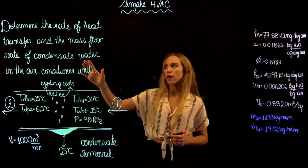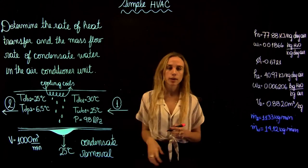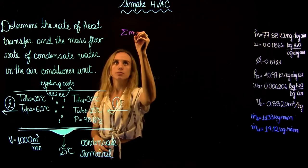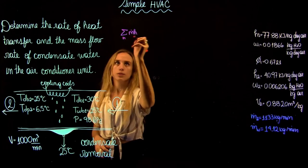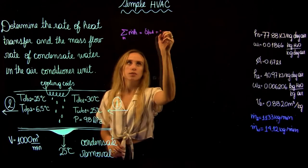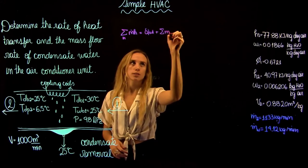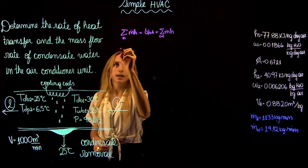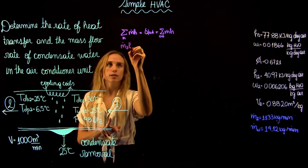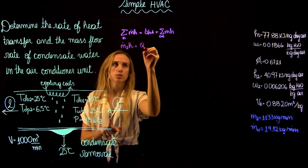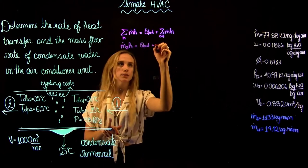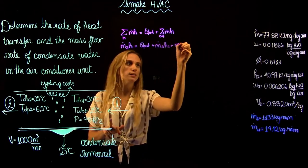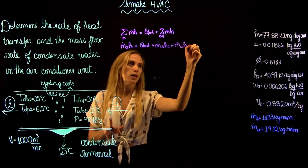In order to find the rate of heat transfer, we have to write the energy equation, which is going to be the sum of the mass flow rate times the enthalpy of what's coming in equals Q out plus the sum of the mass flow rate times enthalpy of what's coming out. We can rewrite this as mass flow rate of air times H1 equals Q out plus mass of air times H2 plus mass flow rate of water times H water.